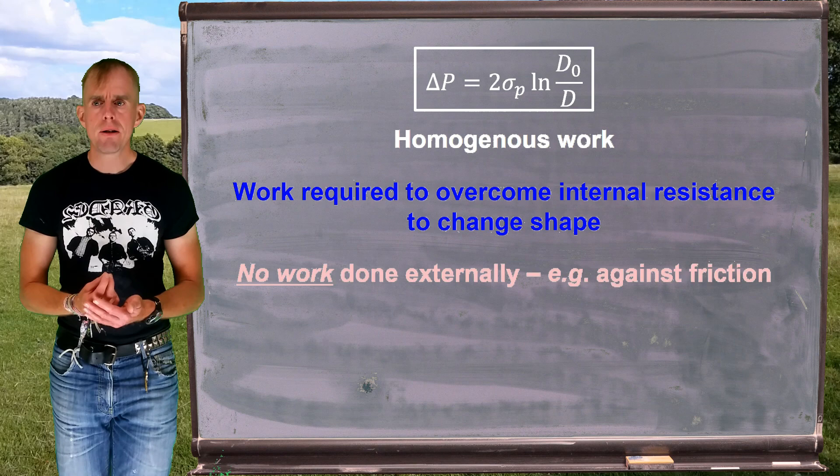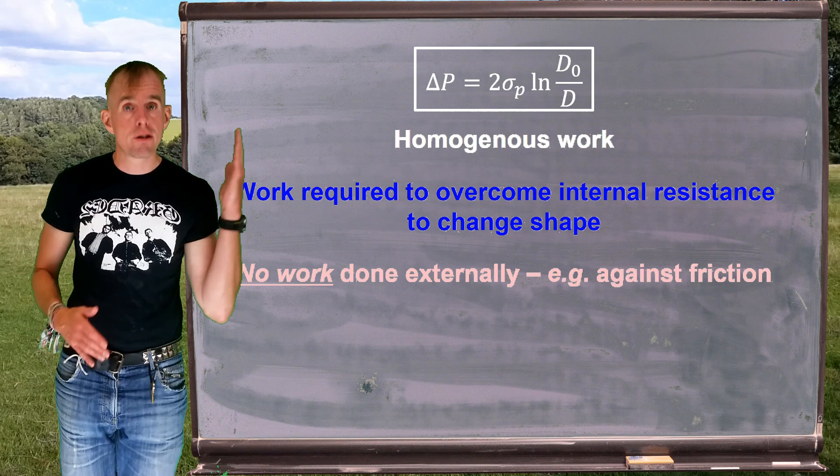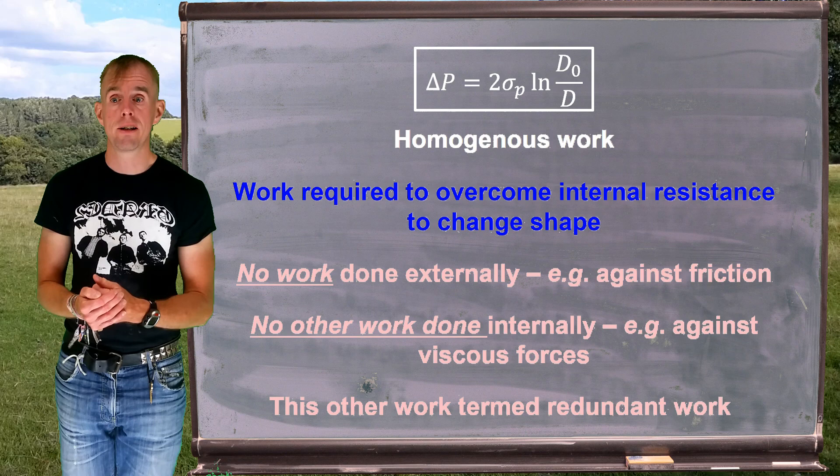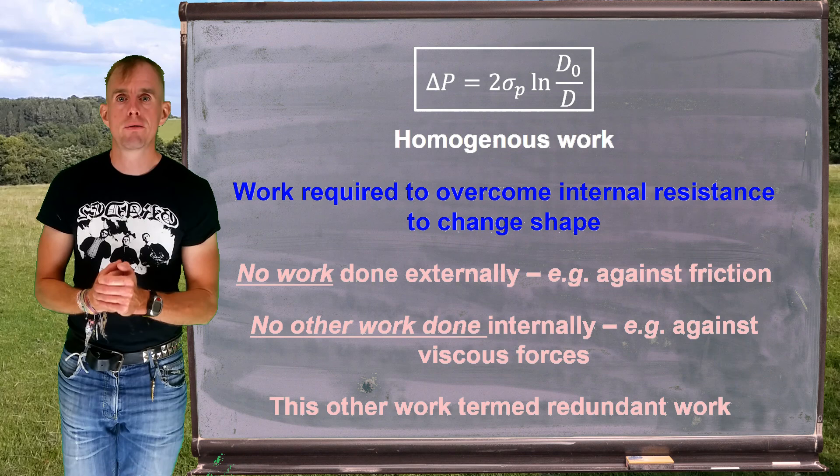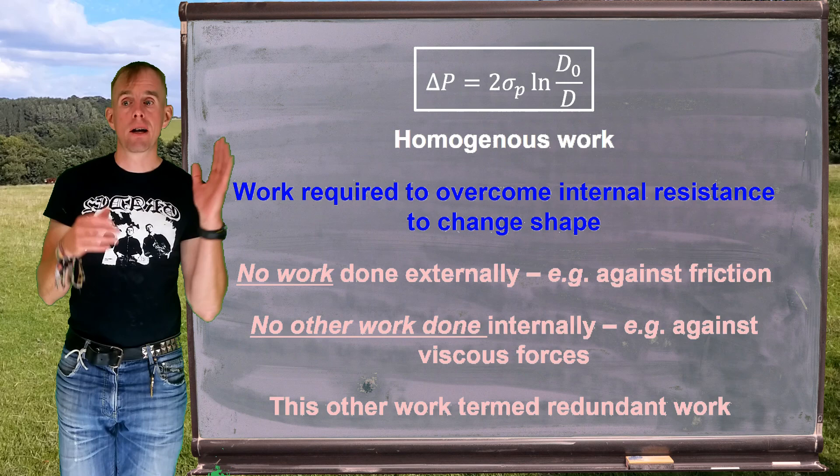Now, when we have a look at viscoplastic materials, we'll see that actually the expression is a lot more complex because they have to do work against friction as they slip through an extruder. This does not include that. There is no external work done in this equation. Other than the internal resistance to shape change, there's no other internal work done either. So real materials will also have to overcome internal viscous forces. So this really is a very simple expression. And in the next part of this lecture, we're going to develop or see how one would develop a more complex expression that has this external and internal work done against friction and viscous forces.